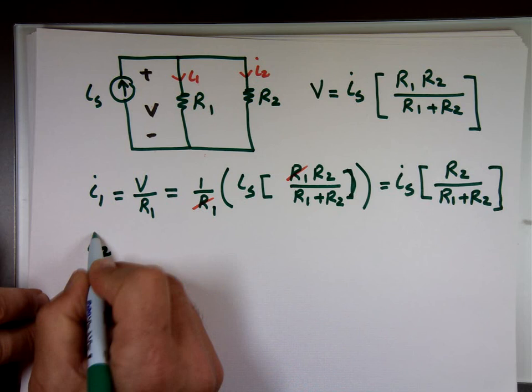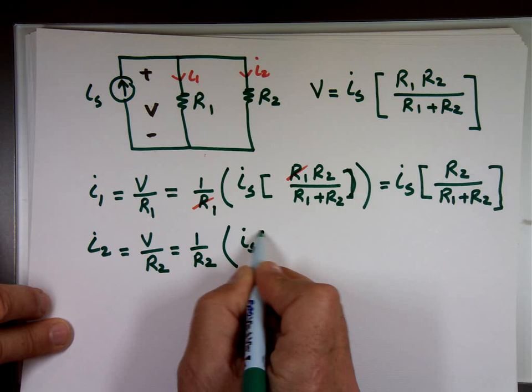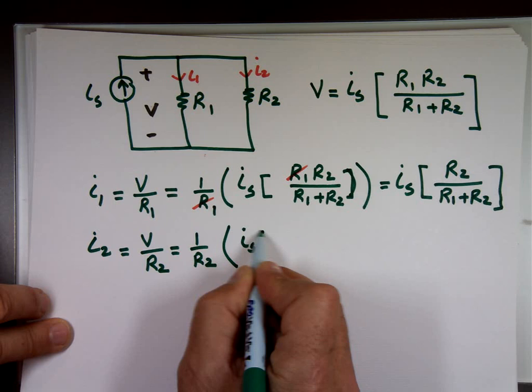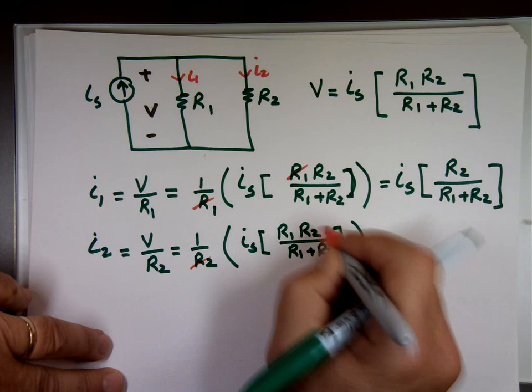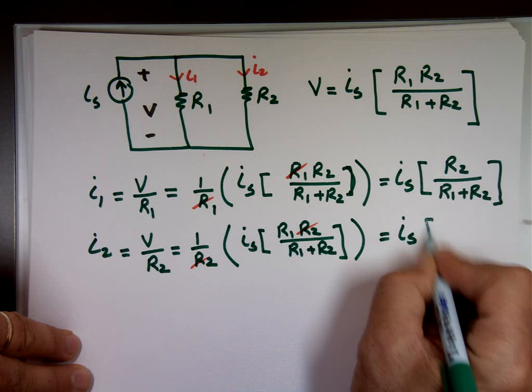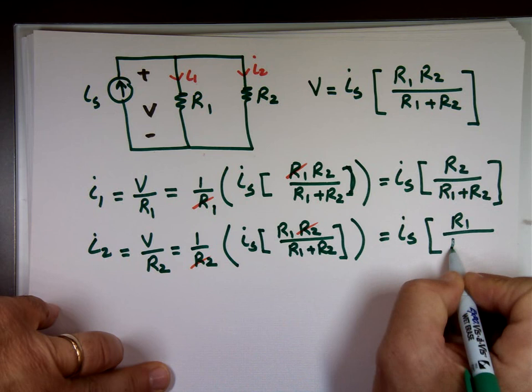And I sub 2, it's V over R sub 2. And I sub 2, it's V over R sub 2. And now the R sub 2's will cancel. And you end up with what? I sub S times what? R sub 1 over R sub 1 plus R sub 2. Very similar to the other equation.